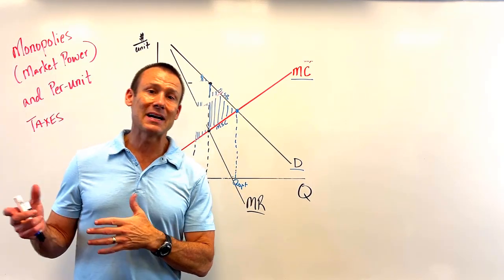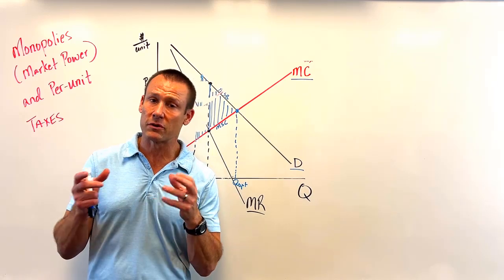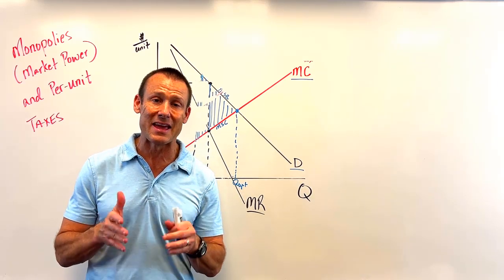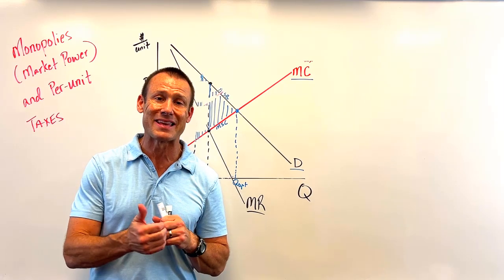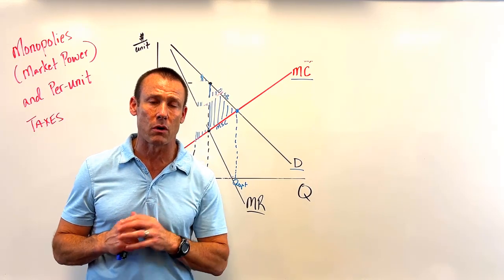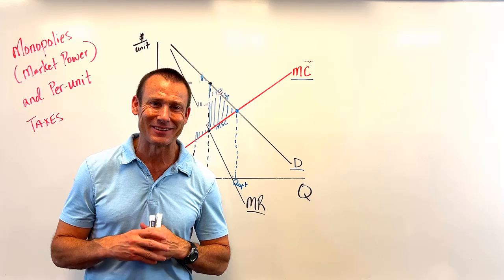One of the regulations we might put forward is that per-unit tax, but we're seeing besides the government getting some revenue, there's definitely some negatives. And the biggest negative is that deadweight loss getting bigger as the output decreases even more. Hope that makes sense to you. We'll talk to you in the next video.